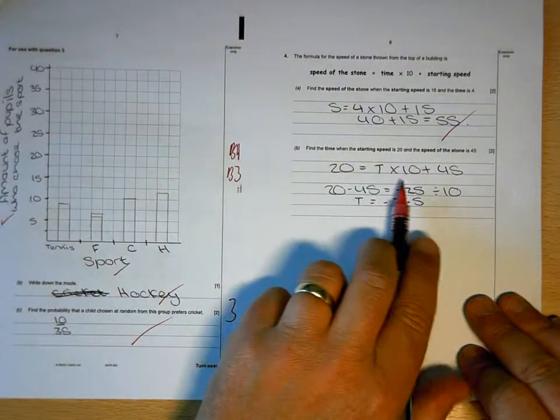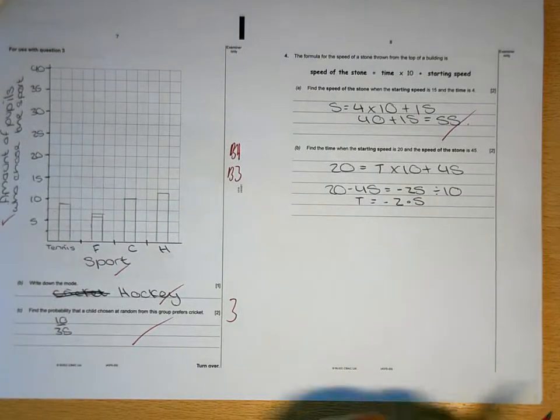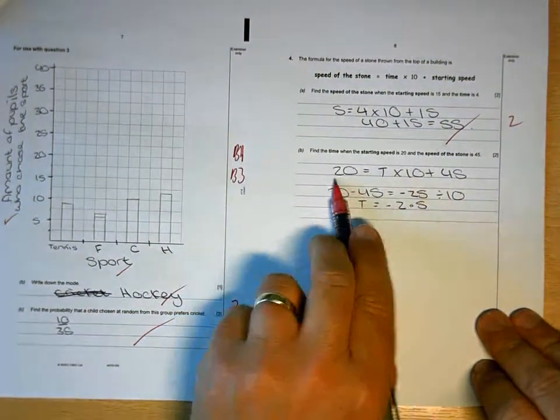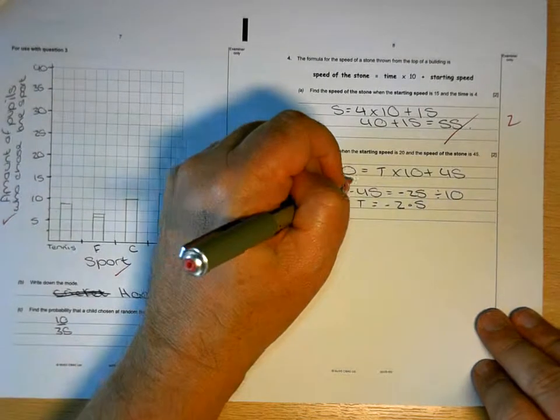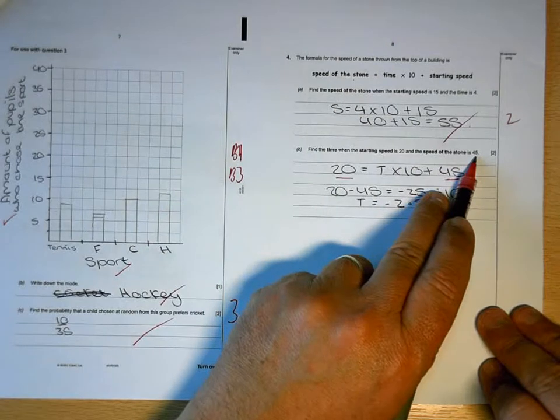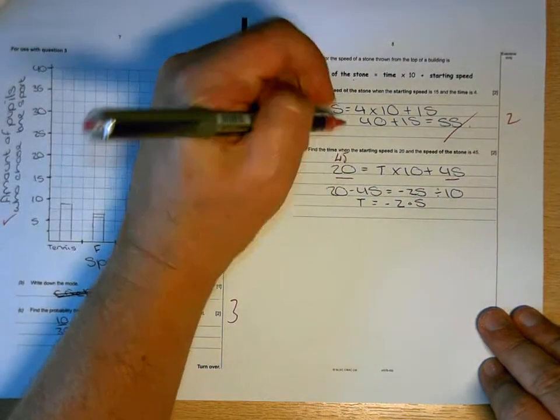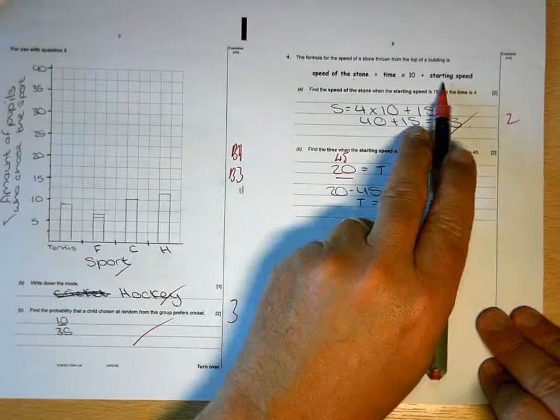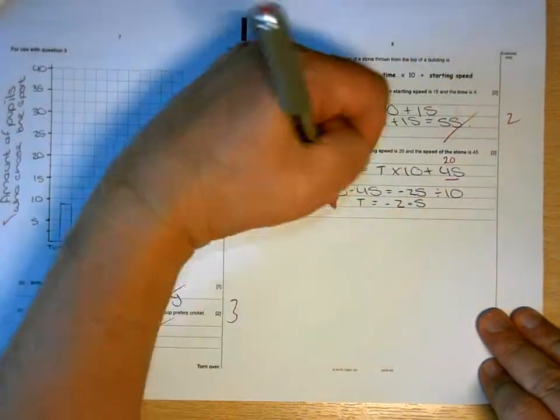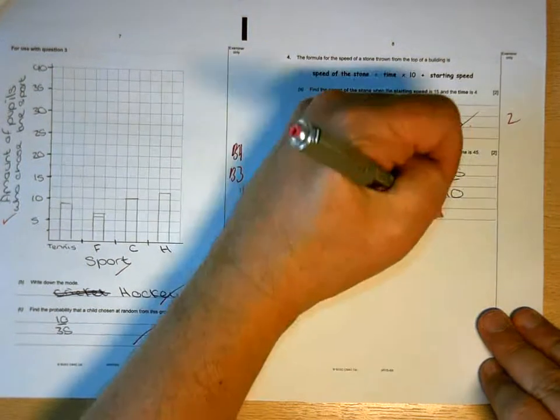Okay, so what you've done wrong here is you've substituted the wrong bits into the equation. The speed of the stone is 45, so that should be 45, and the starting speed is 20, so those two are the wrong way around.